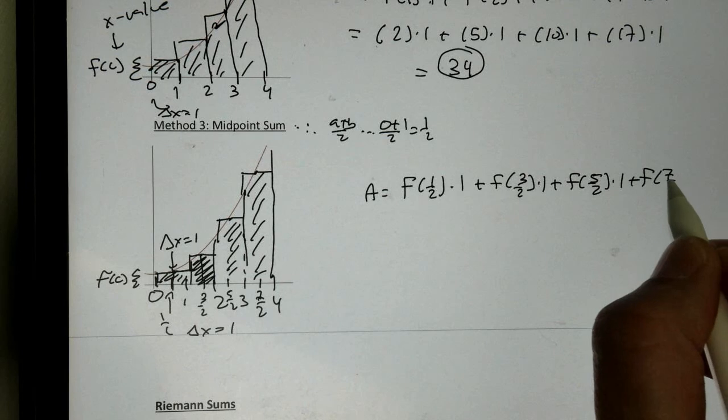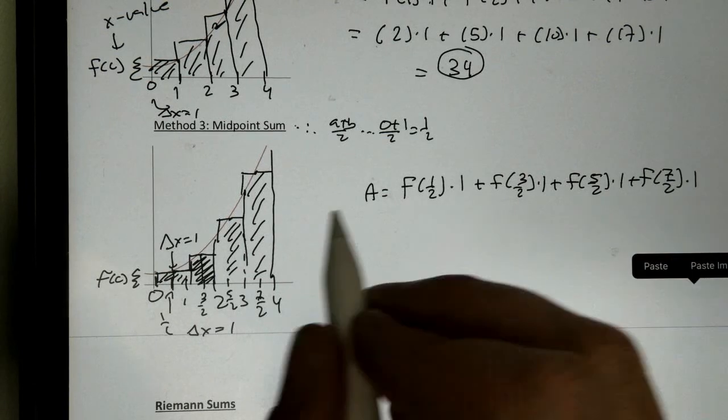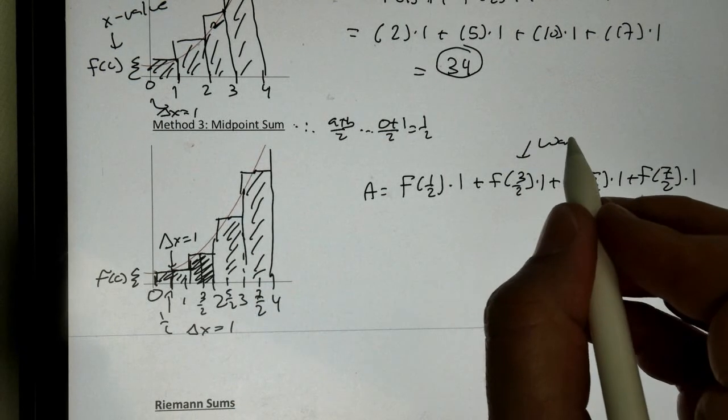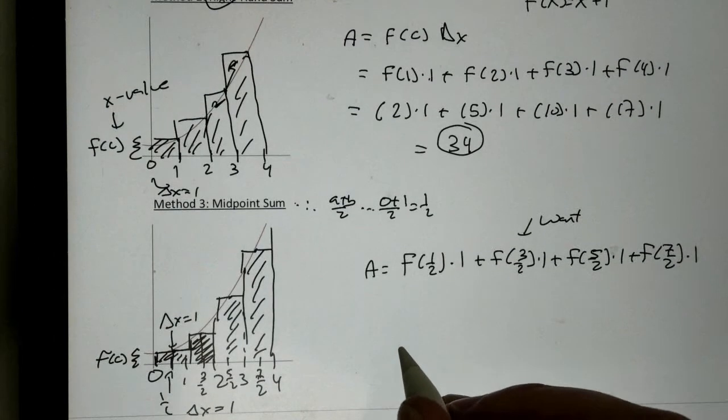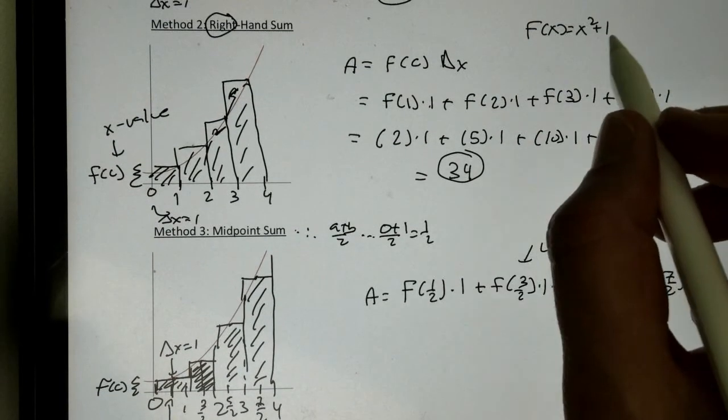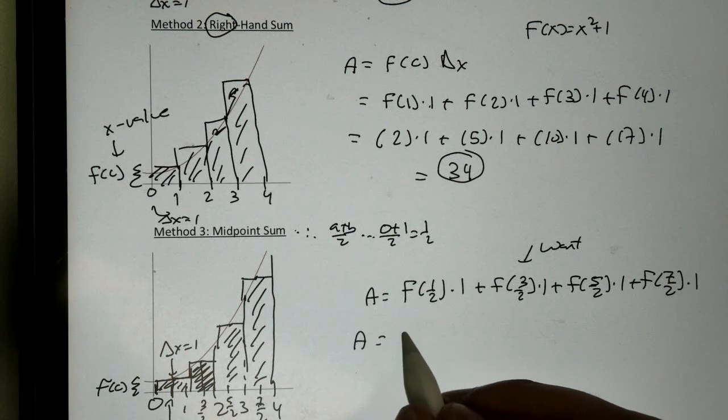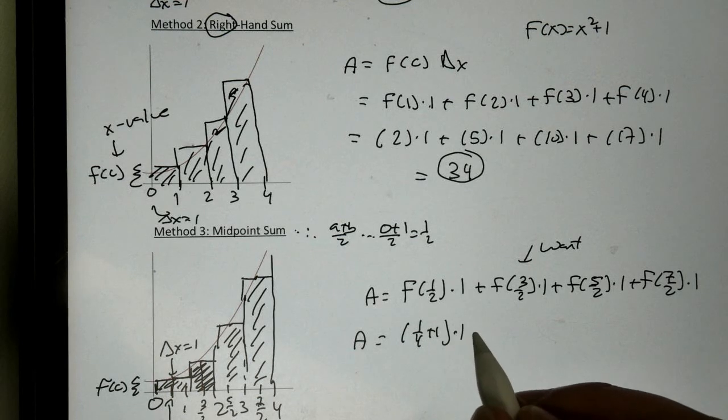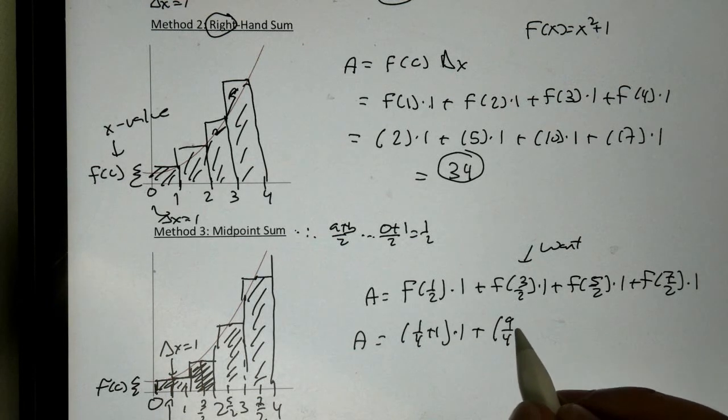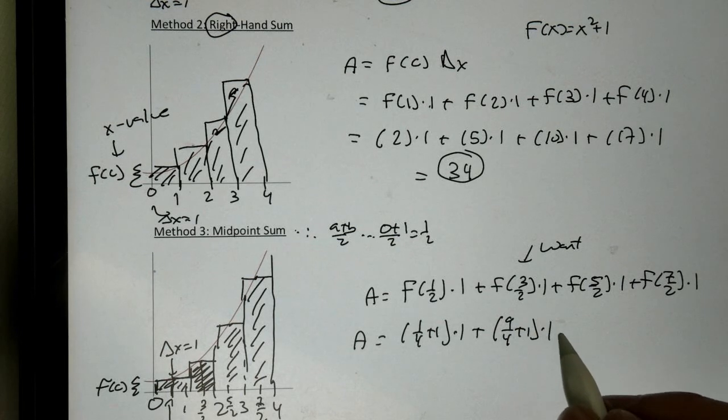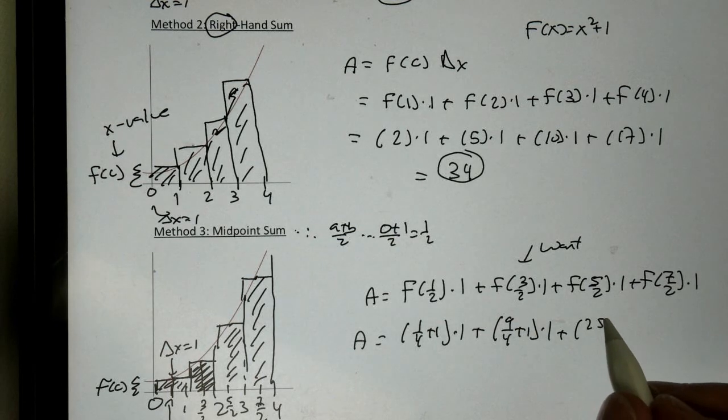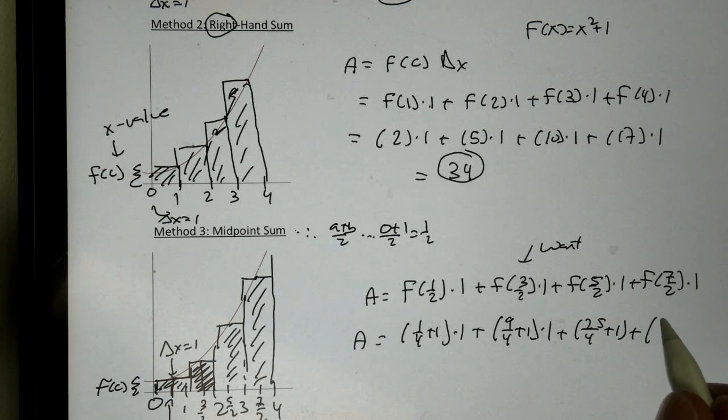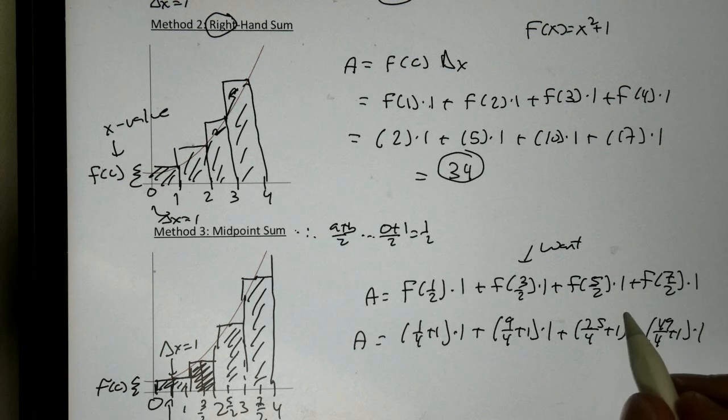Now, notice, you want to have this. And now, we're going to plug in. Plugging into our function, we're going to get really good. 1 half squared is 1 fourth plus 1, times 1. Plug in 3 halves. 9 fourths plus 1, times 1. 5 halves, 25 over 4, plus 1. And then 7 halves, 49 over 4, plus 1, times 1, times 1.